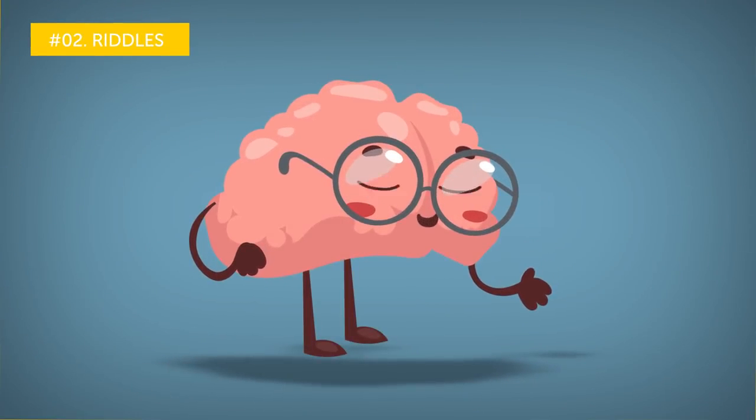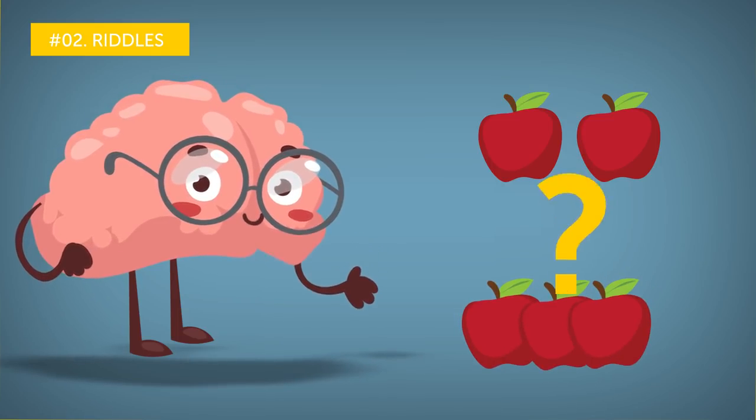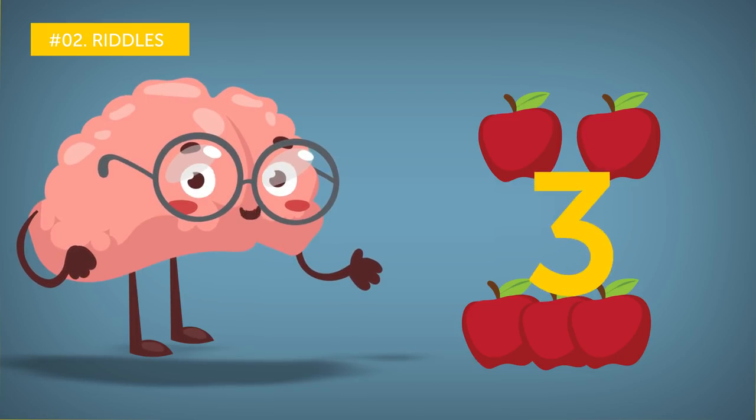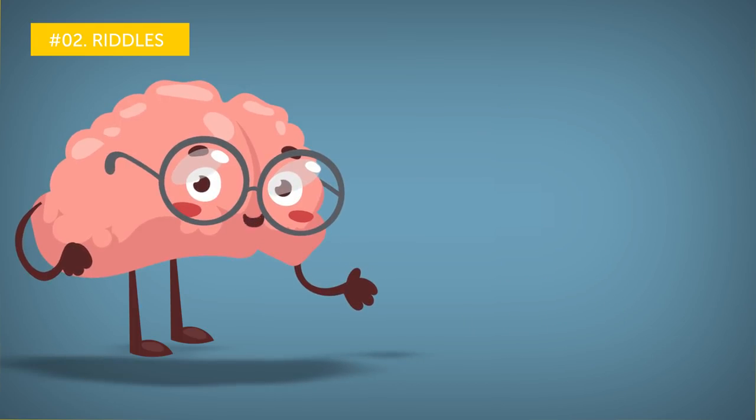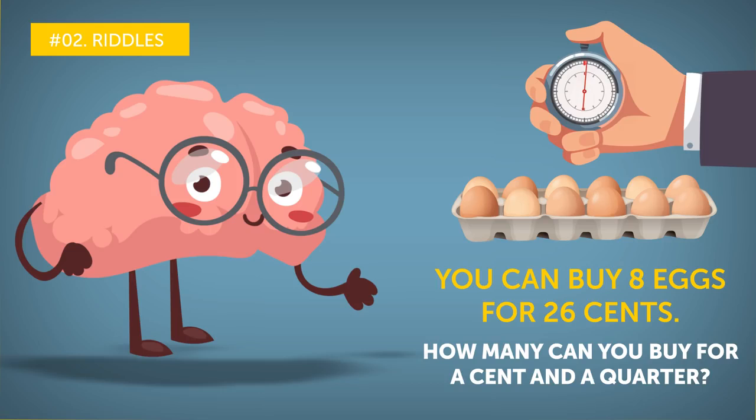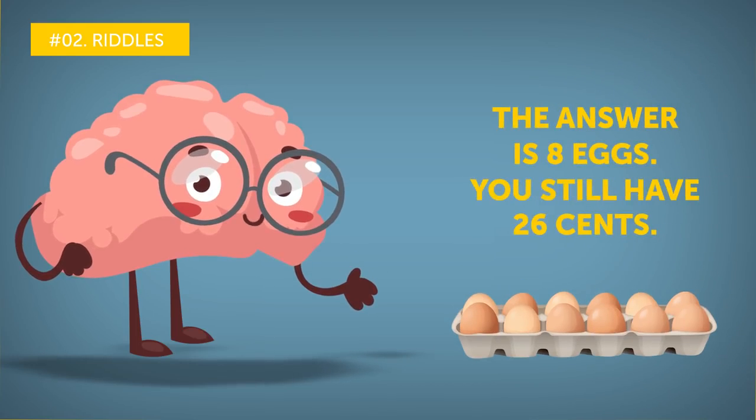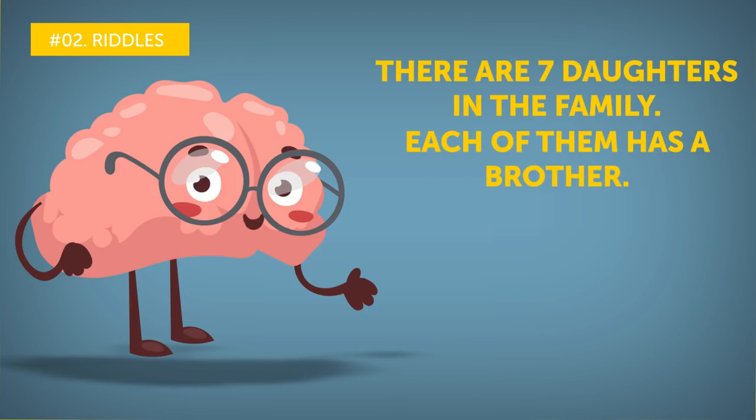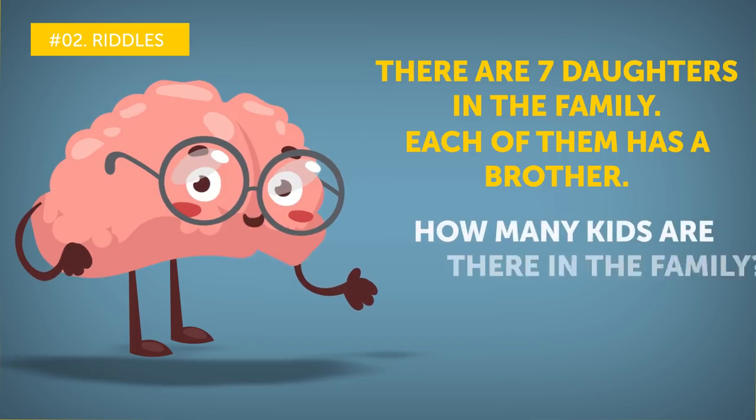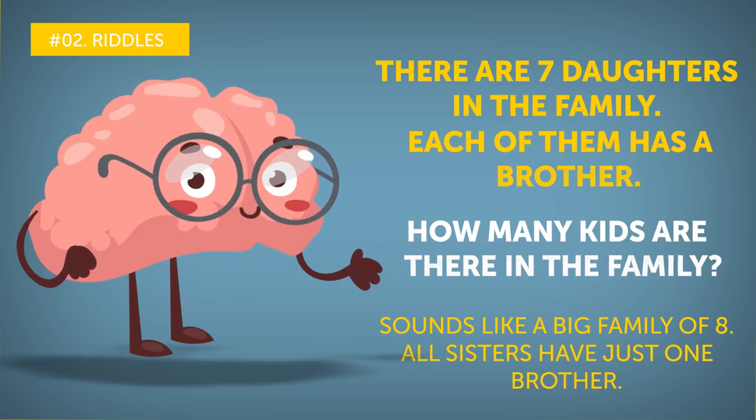Number 2, Riddles. Different kinds of riddles are a great help if you want to keep your mind sharp. Let's give it a go. If you take 3 apples from a group of 5, how many apples will you have? The answer is 3 apples. You just took them yourself. Alright, let's try it again. You can buy 8 eggs for 26 cents. How many can you buy for a cent and a quarter? Five seconds to think it over. The answer is 8 eggs. You still have 26 cents. There are 7 daughters in the family. Each of them has a brother. How many kids are there in the family? Sounds like a big family of 8. All sisters have just one brother. Alright, enough of that.